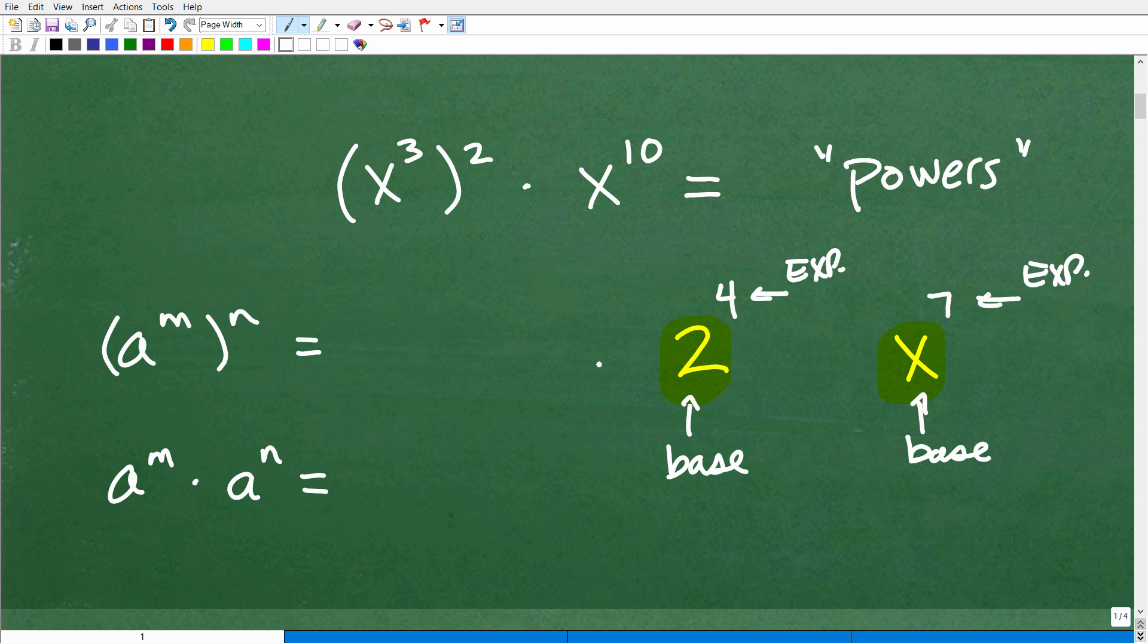And what does it mean? Well, this entire thing is a power. So this is 2 to the 4th power. So the whole thing is a power. And what it means is we're going to take this base, 2, and we're going to multiply it by itself this many times. So that would be 4 times. So 2 times 2 times 2 times 2. That's what 2 to the 4th power means. This is what we call expanded form. And this is in a power form.